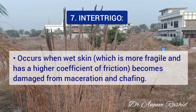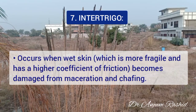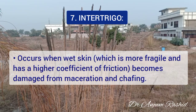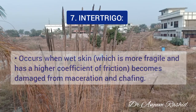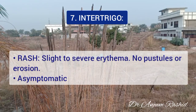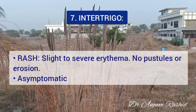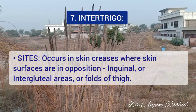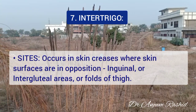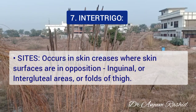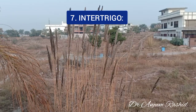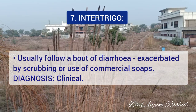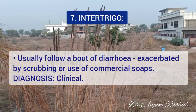The seventh type is intertrigo. It occurs when wet skin, which is more fragile and has a higher coefficient of friction, becomes damaged from maceration and chafing. The rash consists of slight to severe erythema with no pustules or erosions. It is usually asymptomatic, occurring in skin creases where skin surfaces are in opposition, such as inguinal or intergluteal areas or folds of the thigh. It usually follows a bout of diarrhea, exacerbated by scrubbing or use of commercial soap. It is diagnosed clinically.